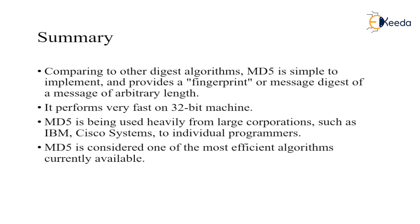Compared to other digest algorithms, MD5 is simple to implement and provides a fingerprint — a message digest — of a message of arbitrary length with a fixed-length output. It performs very fast on 32-bit machines. MD5 is heavily used by large corporations like Cisco Systems and IBM as well as individual programmers, due to its greater functionality for implementing hashes. MD5 is considered one of the most efficient algorithms currently available. Thank you, I hope you have got the concept of the MD5 algorithm.